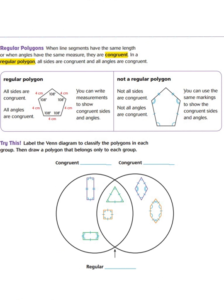Let's take a further look at regular polygons. When line segments have the same length, or when angles have the same measure, they are congruent. In a regular polygon, all sides are congruent and all angles are congruent. Over here on the left, we have our regular polygons where all sides are congruent, all angles are congruent, and you can write measurements to show congruent sides and angles.